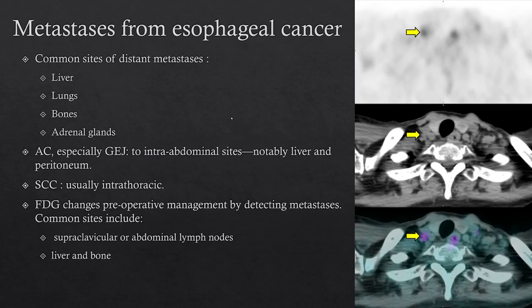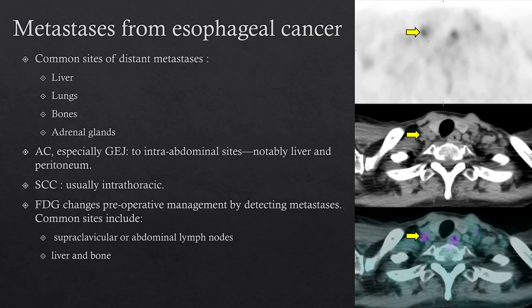Metastases from esophageal cancer occur at typical sites including the liver, lungs, bones, and adrenals. Adenocarcinoma, particularly at the gastroesophageal junction, is more likely to metastasize to abdominal sites such as the liver and peritoneum. With squamous cell carcinoma, metastases are typically intrathoracic. FDG changes can also alter preoperative management by detecting metastases — common sites are supraclavicular and abdominal nodes, liver, and bone. In this image, focal uptake is seen in a neck node in a patient with esophageal cancer.